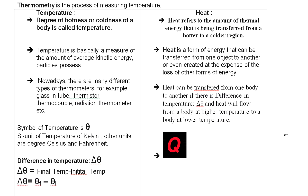Heat keeps moving from a hotter body to a colder body — you cannot store it. It will keep on moving. If you want to store it, you must maintain the temperature artificially. Heat can be generated by the conversion of energy: one form of energy is lost into another. This can be done by burning, combustion, and friction.